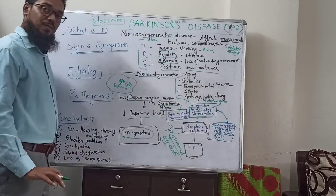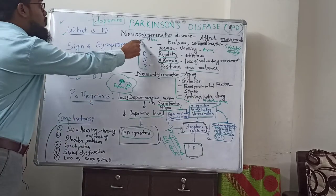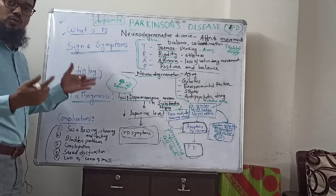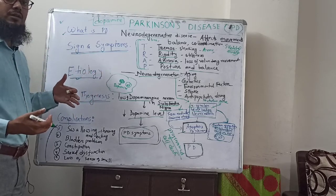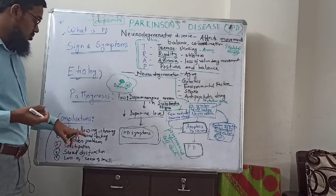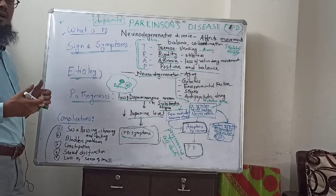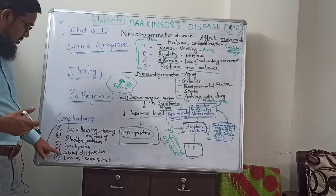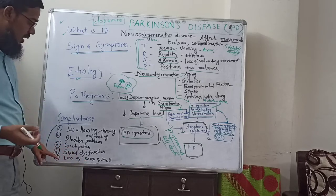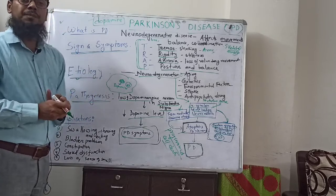Now, what complications occur? Movement complications occur — the person is unable to move, unable to walk freely, and will feel difficulty in eating, swallowing, chewing, and talking. Besides this, bladder problems and urinary retention occur, constipation occurs, sexual dysfunction occurs, and loss of sense of smell — the person is unable to get a proper sense of smell. Various types of complications occur. This is a brief overview of Parkinson's disease.